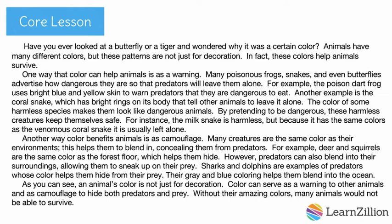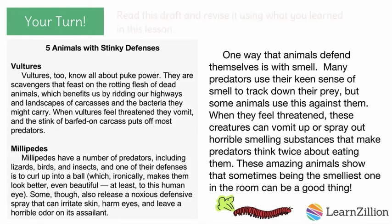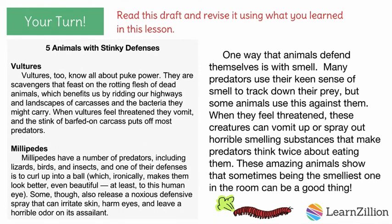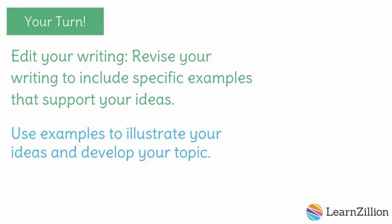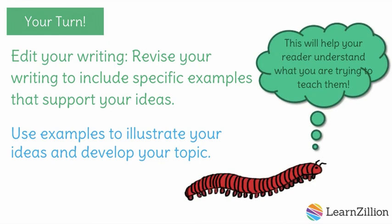Wow! Adding these examples has made my ideas so much easier to understand. Instead of just claiming that color can help animals as a warning and as camouflage, I've given specific examples that prove it. By supporting my ideas with evidence, I can help my reader understand how animals' colors help them survive. Now it's your turn. Read this draft and revise it using what you have learned in this lesson. Pause the video now. Look at your own writing and revise it to include specific examples that support your ideas. Now you know how to use examples to illustrate your ideas and develop your topic. This will help your reader understand what you are trying to teach them.